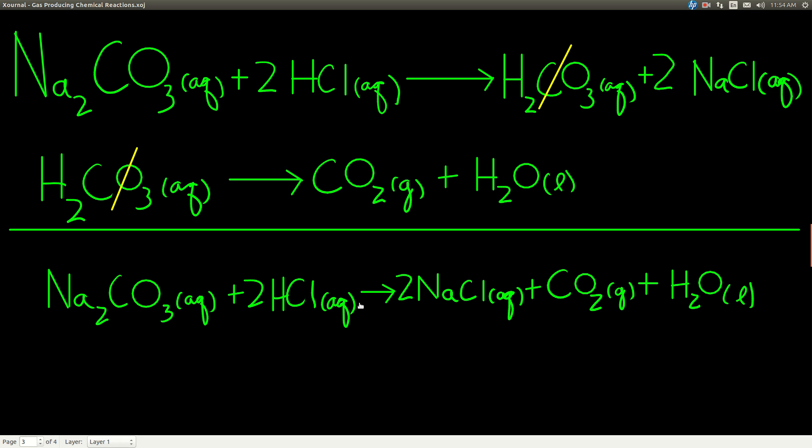So on the left side of the arrow, we have sodium carbonate reacting with hydrochloric acid to make sodium chloride, carbon dioxide gas, and liquid water. And so what you see when you add hydrochloric acid to sodium carbonate is you see bubbles. The bubbles are the carbon dioxide gas involved.